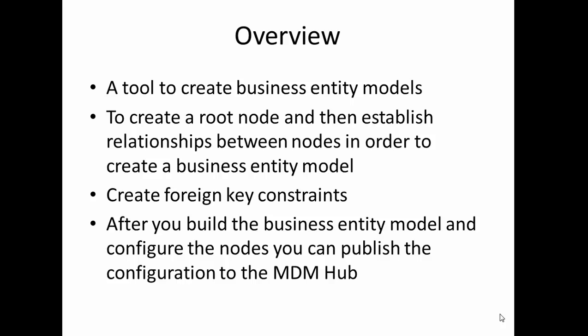In this tool, every object or every table in the MDM Hub is represented as a node. To create a root node we use the provisioning tool, and then we can create other components or sub-nodes. Once we create a root node and other sub-nodes — also called business entity nodes — we can publish the relationship between the nodes. In order to create the business entity model, we also have to create foreign key constraints using the MDM Hub. Whenever we create two tables — one parent and one child — we have to define the referential integrity or relationship among those tables using the MDM Hub. After building the business entity model and configuring the nodes, we can publish the configuration to the MDM Hub, meaning the provisioning tool and MDM Hub are internally linked.